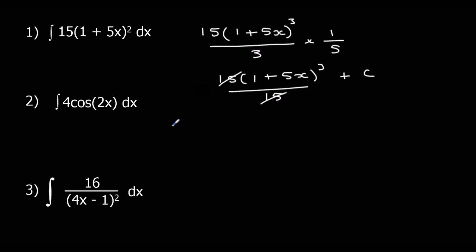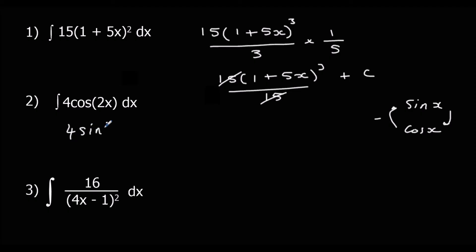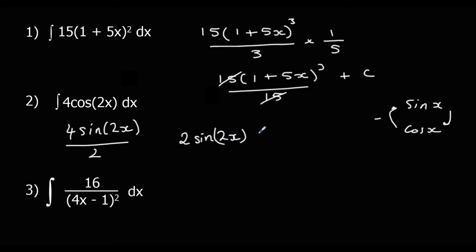Next, integrate 4 cos(2x). When we integrate cos we go to sin, so integrating normally gives 4 sin(2x). Divide by the bracket differentiated, which is 2, giving us 2 sin(2x) plus c.